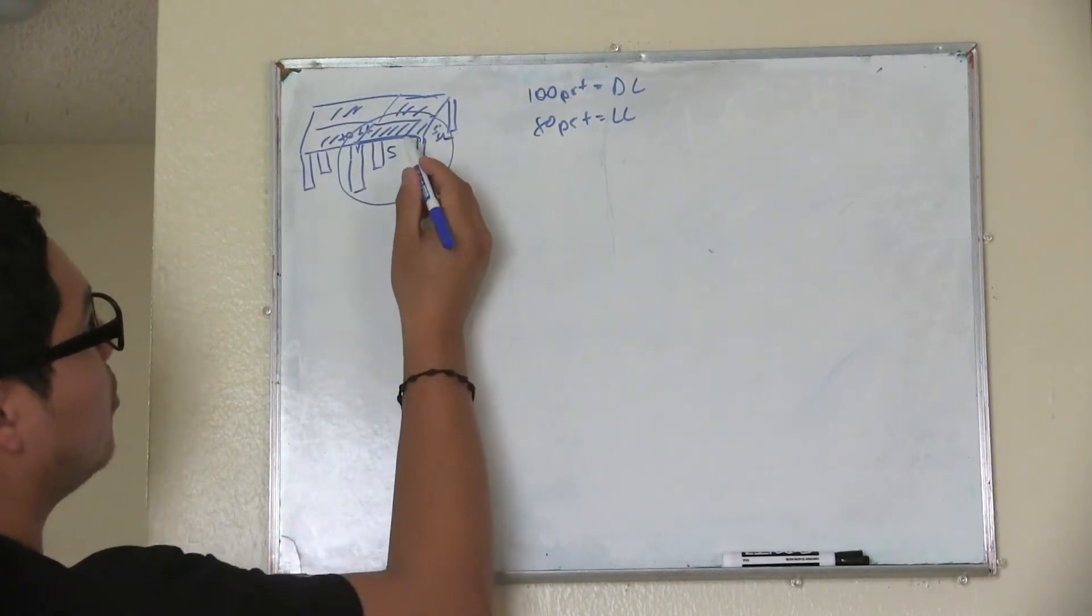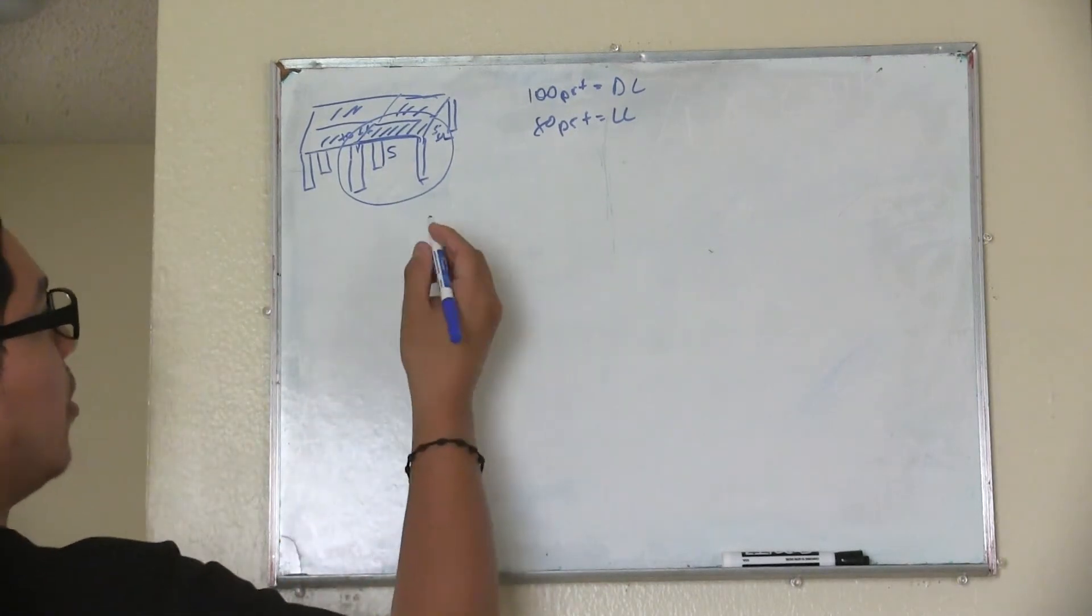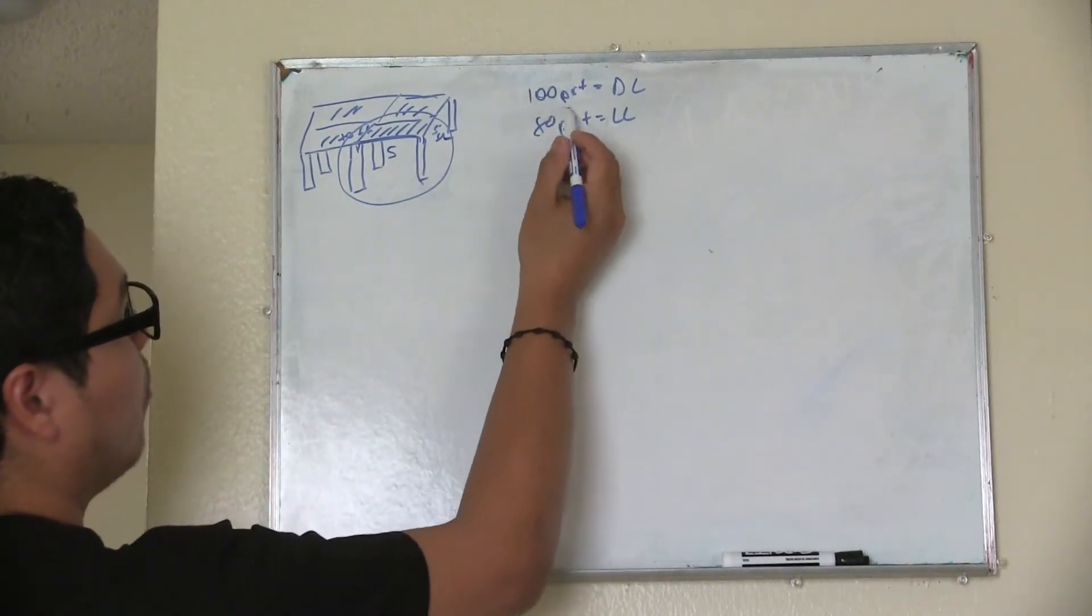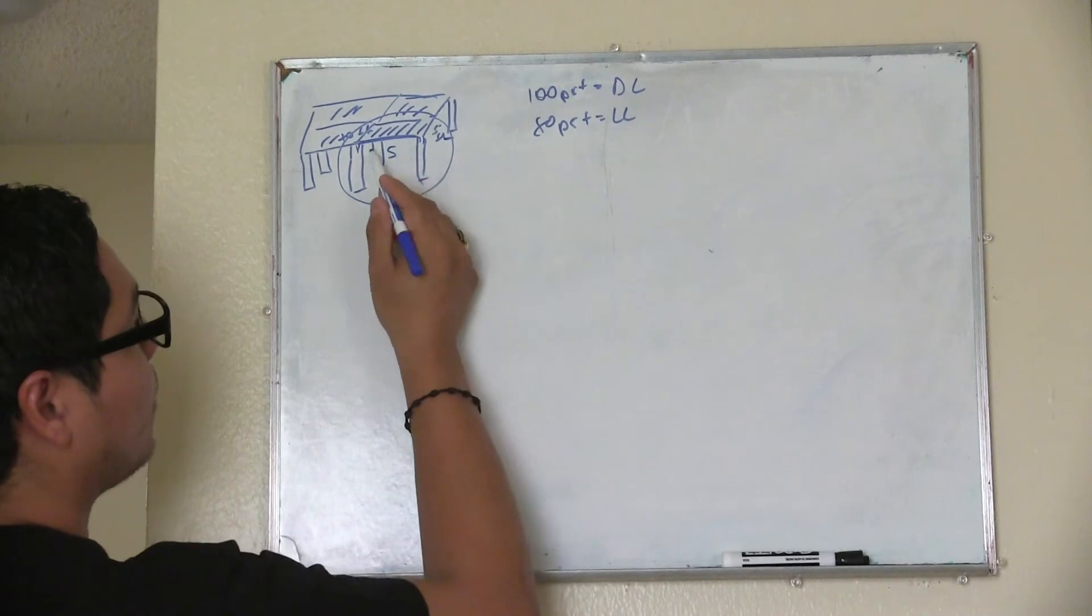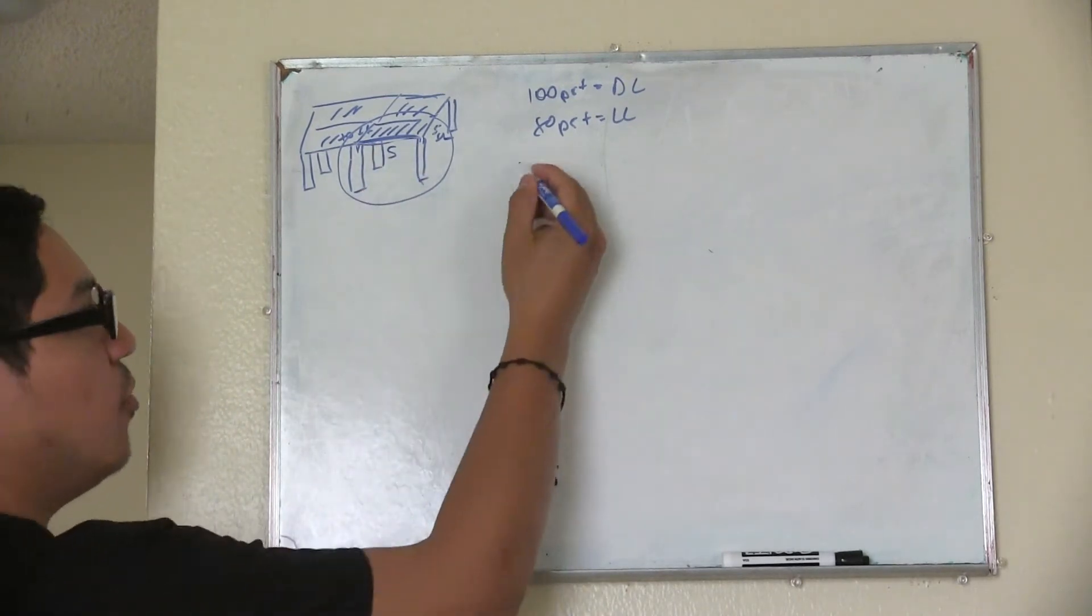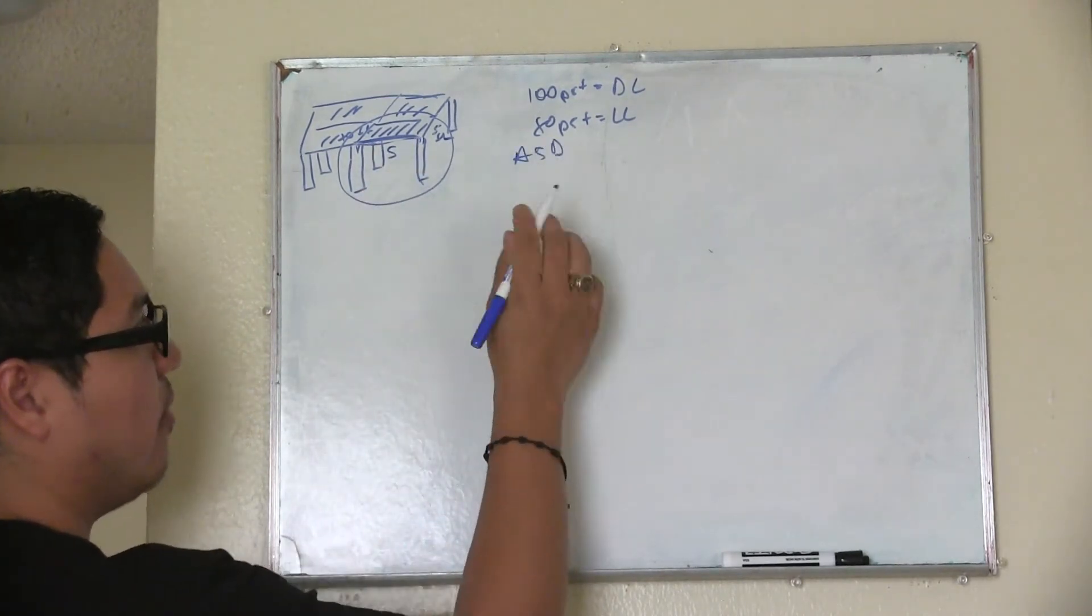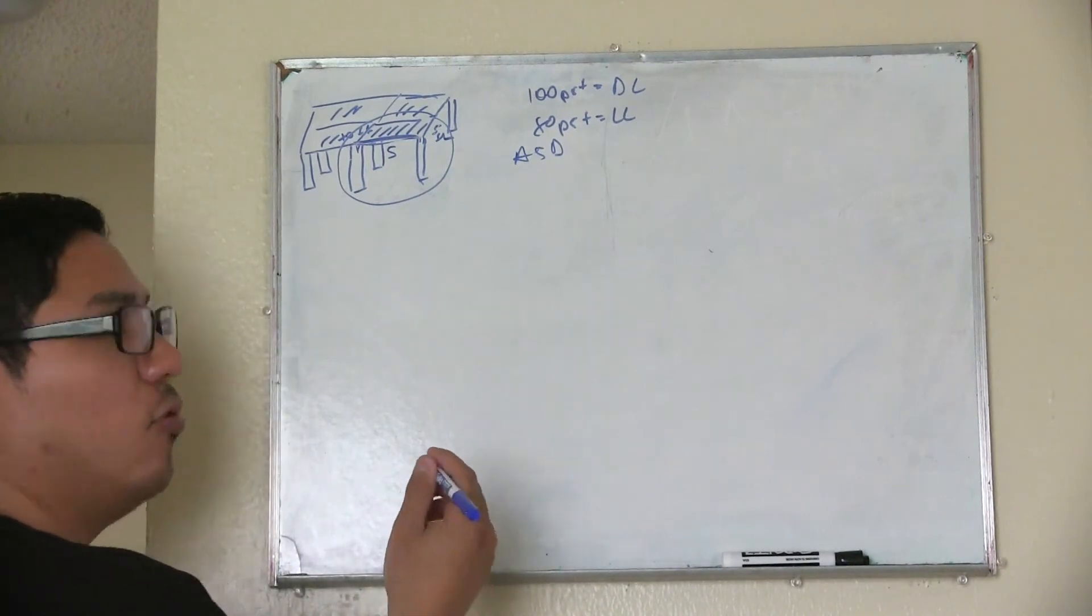So this is going to be your section. So the way you calculate it, you're going to convert your PSF into a linear load. And we're going to do it with ASD just because it's easier and you don't have to do all the 1.2 and 1.6.